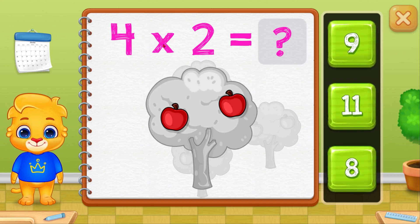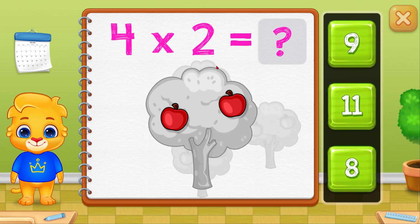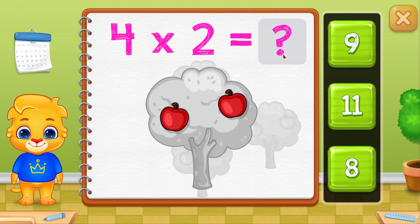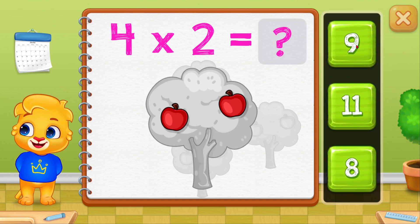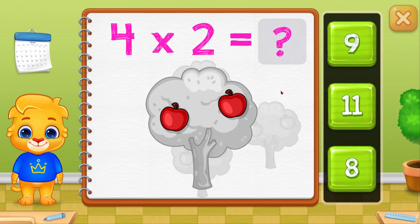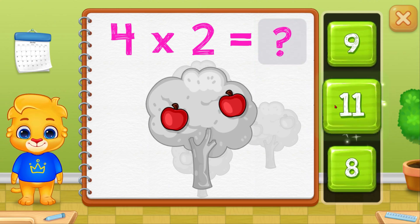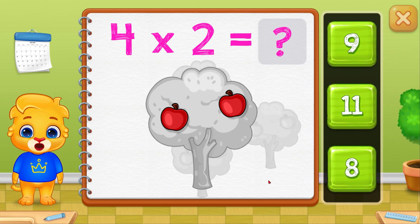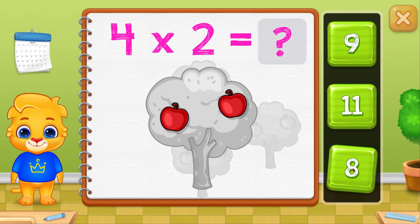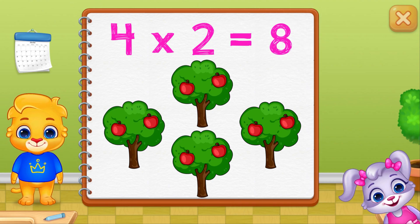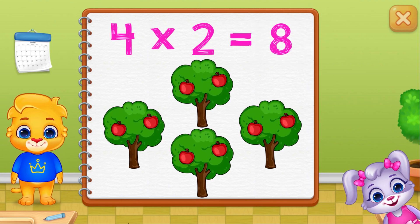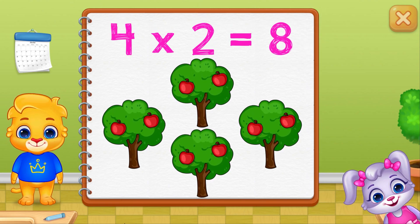Four times two equals... Eight! Four times two equals eight!